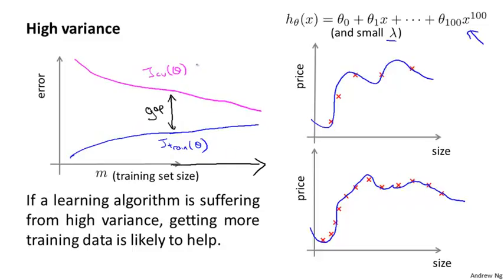The thing we really care about is the cross-validation error or the test set error. In this sort of figure, we can tell that if we keep adding training examples and extrapolate to the right, the cross-validation error will keep coming down. So in a high variance setting, getting more training data is indeed likely to help, and it may be worth your while to see if you can go and get some more training data.